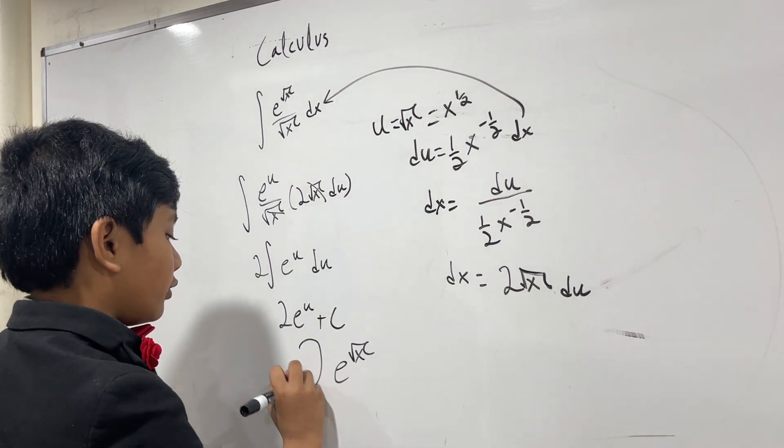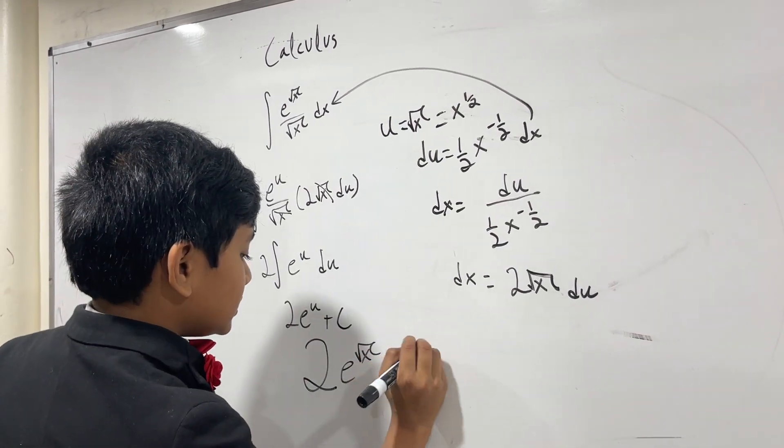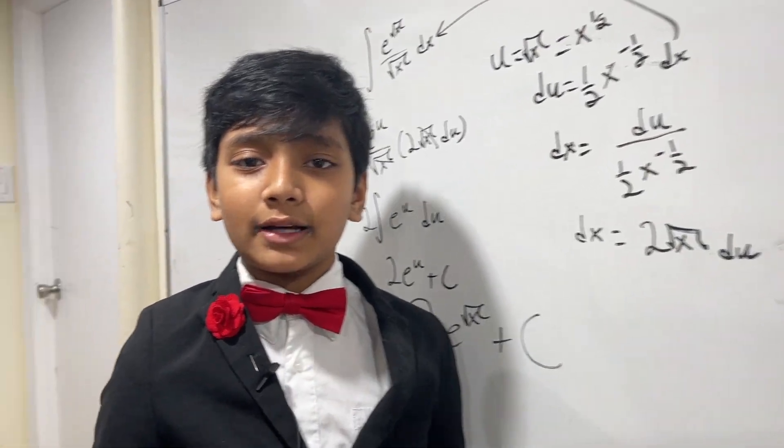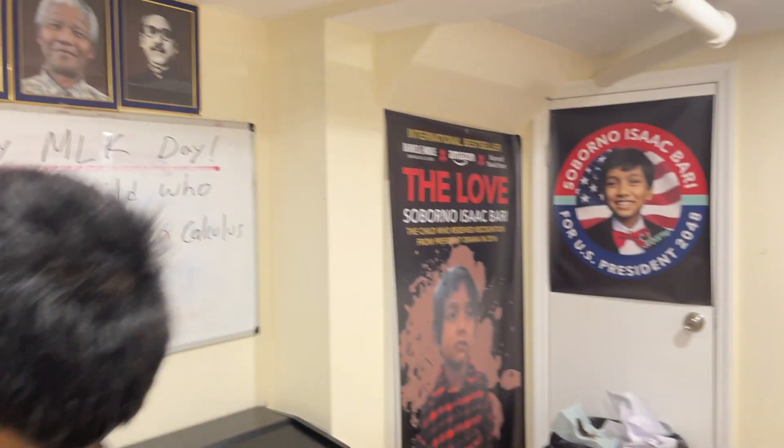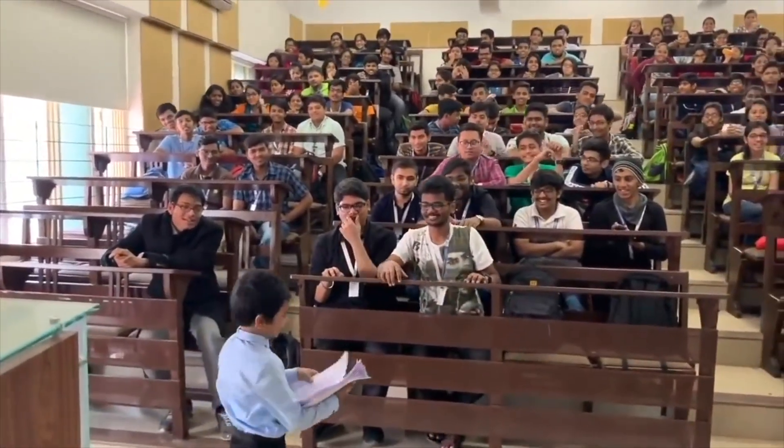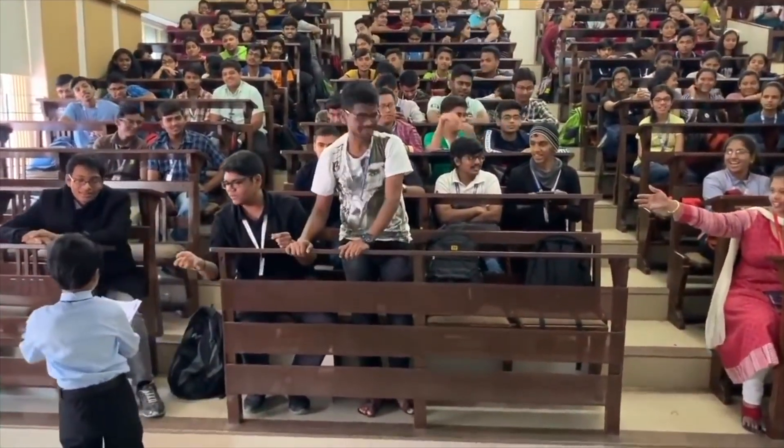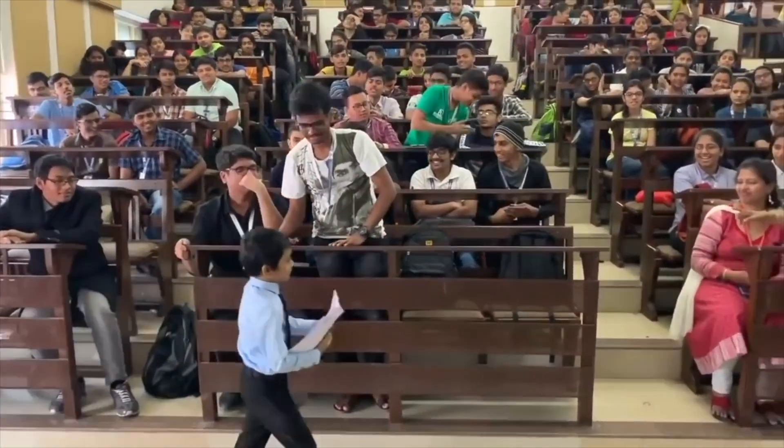That does not look like a 2. 2 e to the root x plus c. Thank you, everybody, for watching. We'll see you in the next one. Bye! Saborno Isaac Bari, who is known as the god of mathematics, became the youngest professor in the history of mankind.